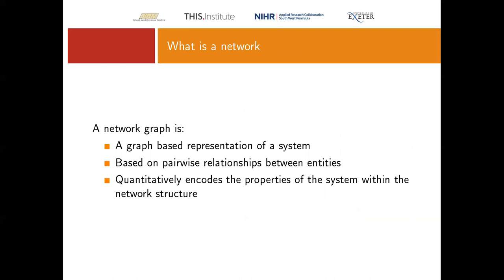The components of a network: a network graph is a graph-based representation of a system. It can be represented in Euclidean space on a Cartesian coordinate system — we can plot it on a pair of axes and describe where everything sits. We can represent nodes and edges on axes and mathematically describe their relationship with each other.